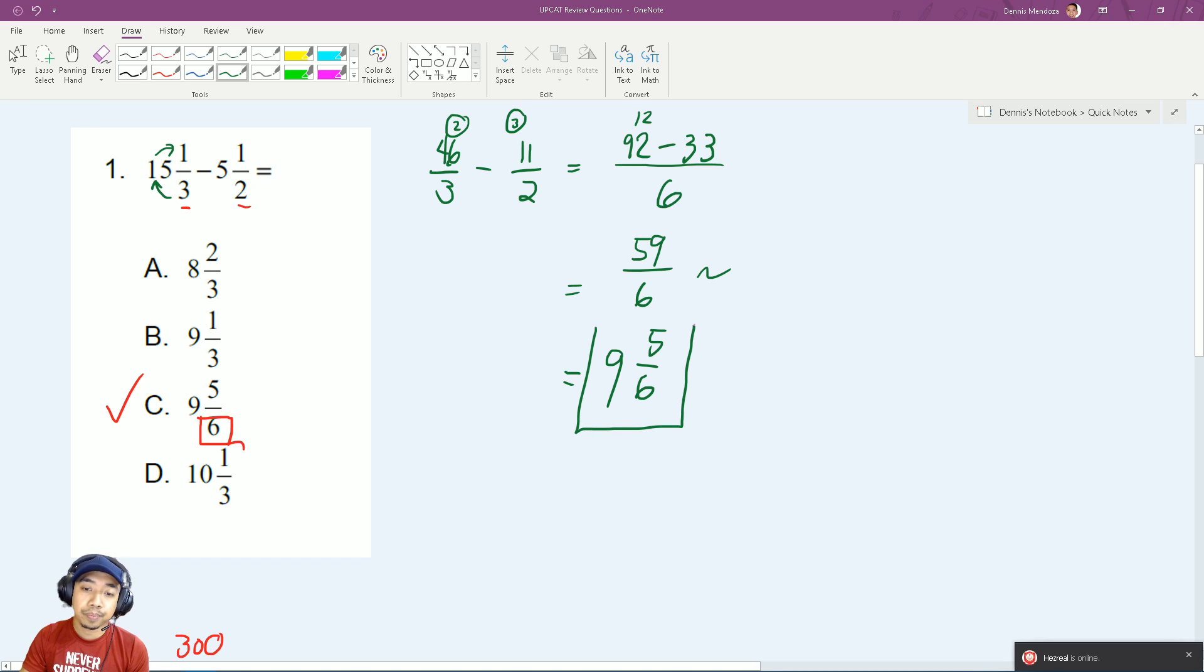92 minus 33. So it's around 60 plus, so 50. 90 minus 30, you know that it is 60. So it will be like 12 minus 3, so it is 59. 59 over 6. And we all know that if we convert this into proper, we know that there are 9 sixes in 59. You can write 9 here, then you know that by multiplying 9 and 6, you will get 54.